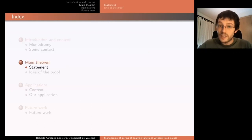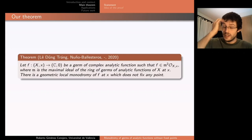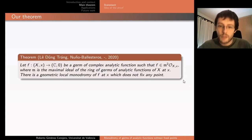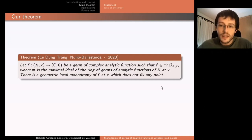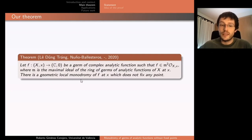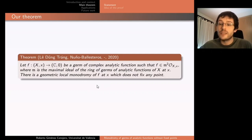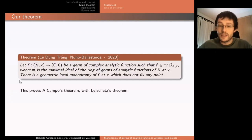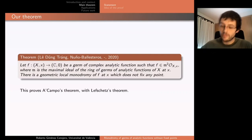This is our main theorem. This year we proved that if we have a germ of complex analytic function that is in the maximal ideal squared, then there exists a geometric local monodromy of f at x which does not fix any point. Together with the Lefschetz theorem, this proves A'Campo's theorem in the context of general varieties.